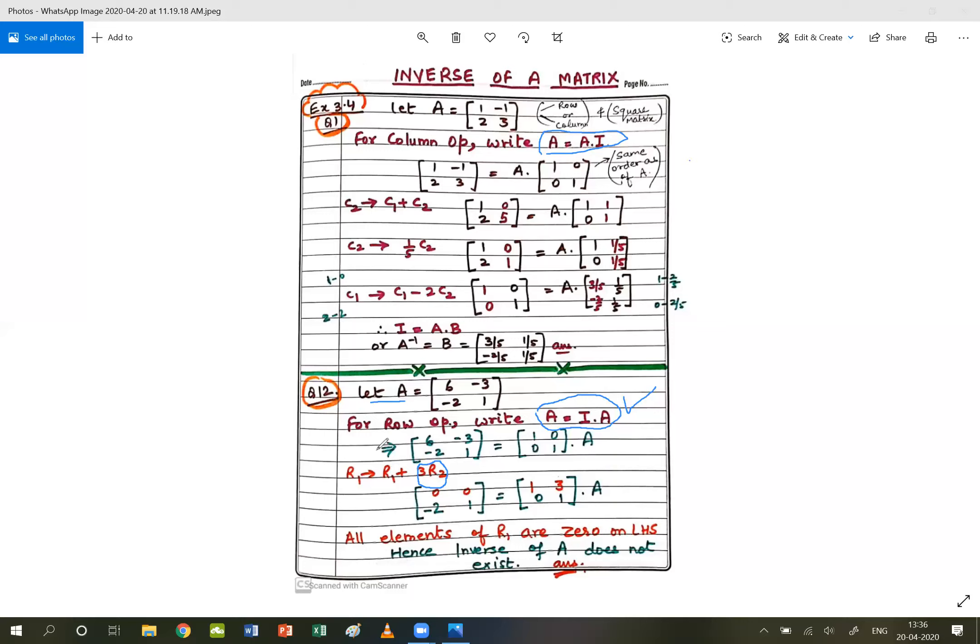Now, let us see what we have to do. So, let us start operation. Row 1 changes to row 1 plus 3 multiplied by row 2. Okay. So, then row 2 by 3 multiplied by row 1. So, let us see here is 0 and here is 0.